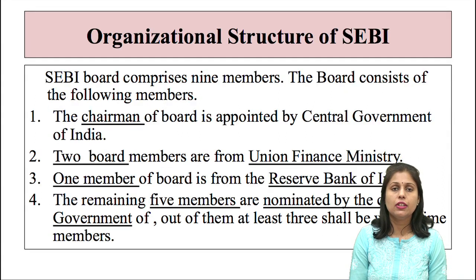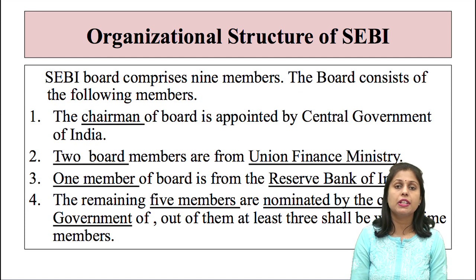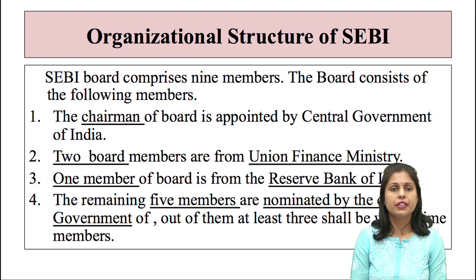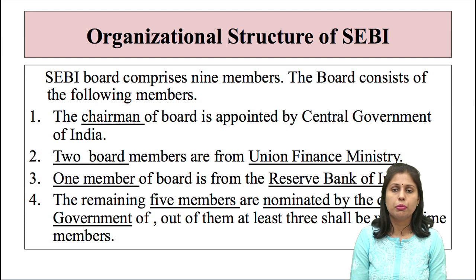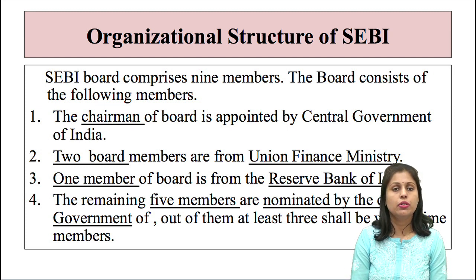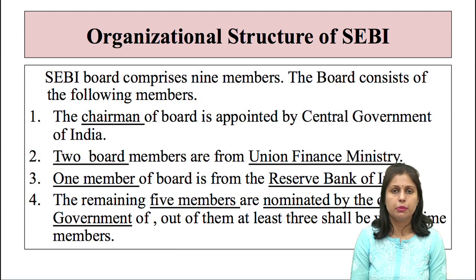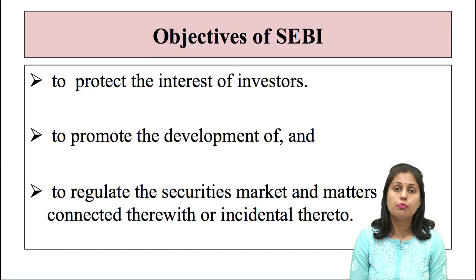Next, we will see the organizational structure of SEBI. SEBI's board has nine members. The chairman of SEBI is appointed by the central government. Besides that, two members are from the Union Finance Ministry. One member of the board is from the Reserve Bank of India. The remaining five members are nominated by the central government, of which three are whole-time members.